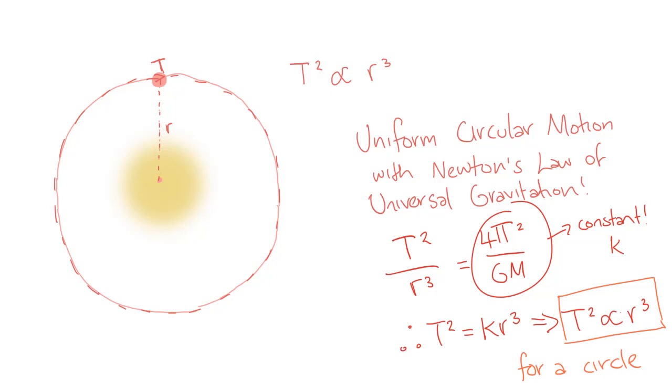More generally, if we consider different orbits, we can find a relationship between the distance of a planet from the Sun and the period of that planet's orbit.